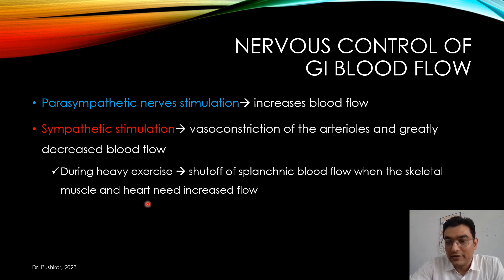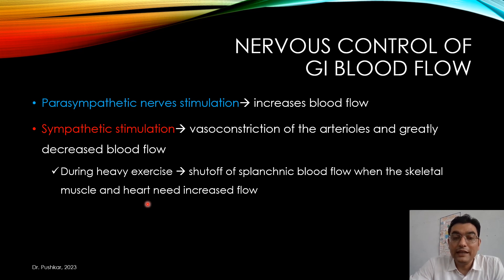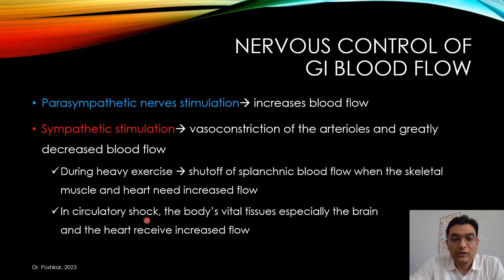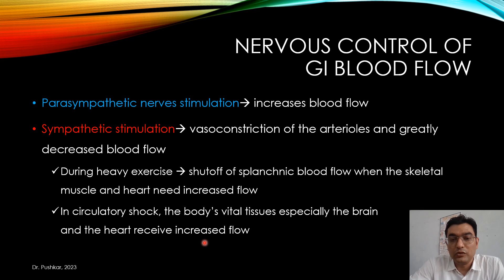The blood is redirected to the skeletal muscles and the heart, which are needed during exercise. Increased heart rate means the heart muscles need increased blood flow and oxygen. In the case of circulatory shock, GI blood flow also decreases because vital organs such as the brain and the heart need the blood and oxygen, again due to sympathetic stimulation.